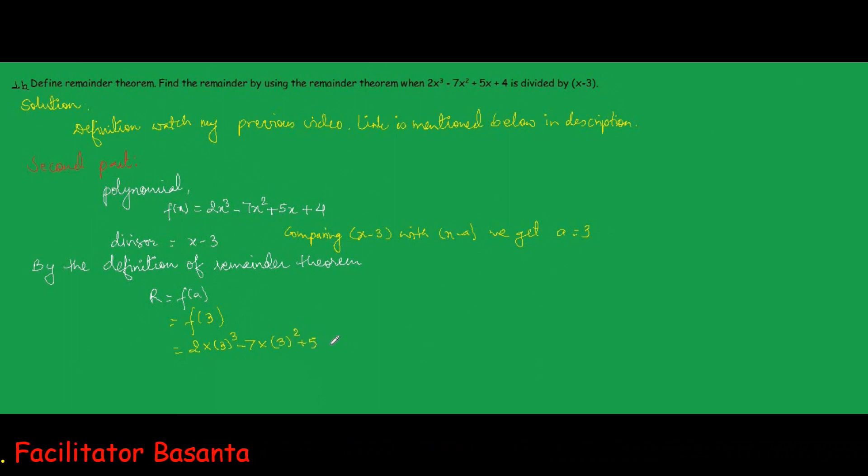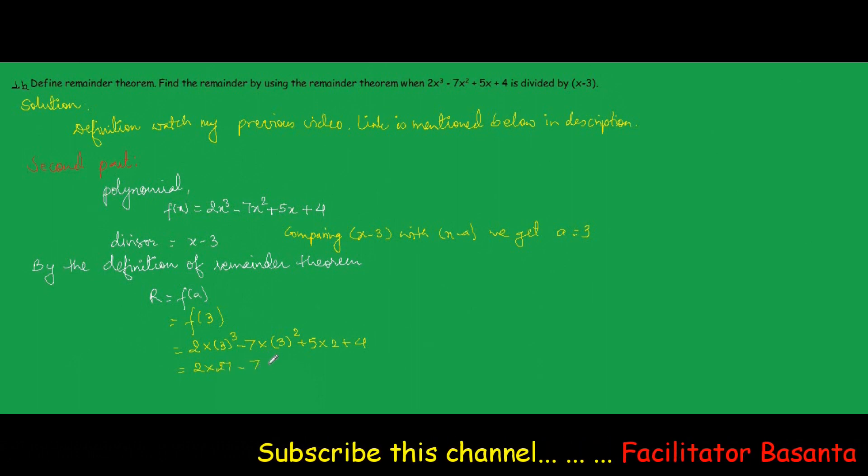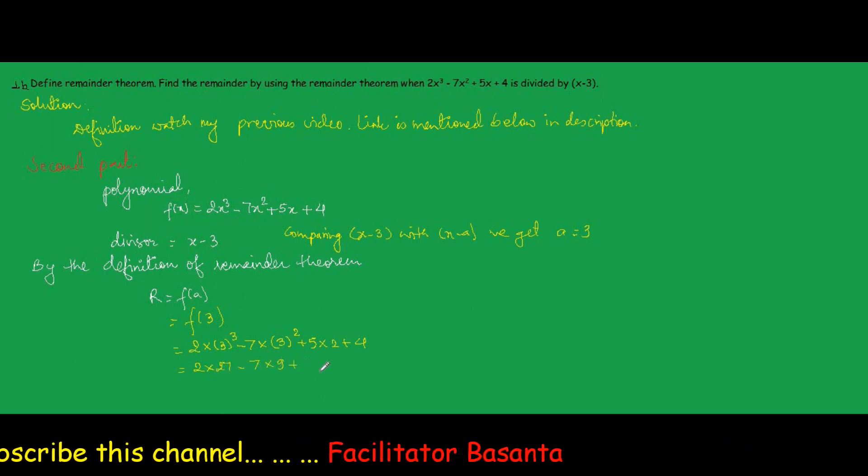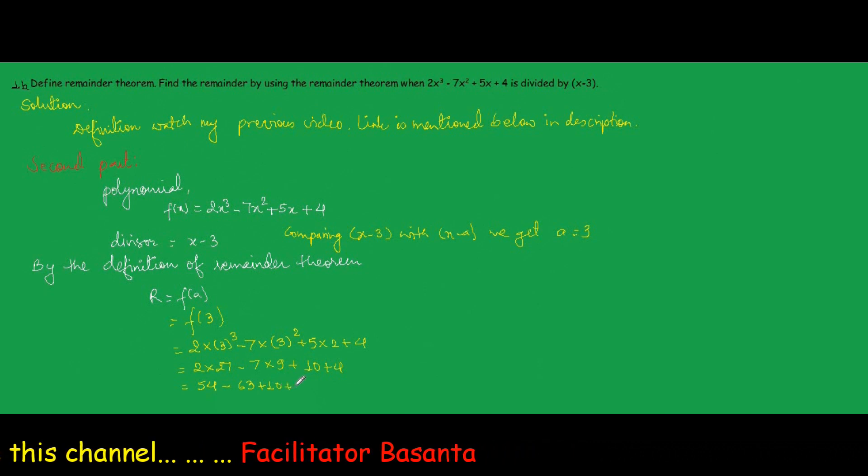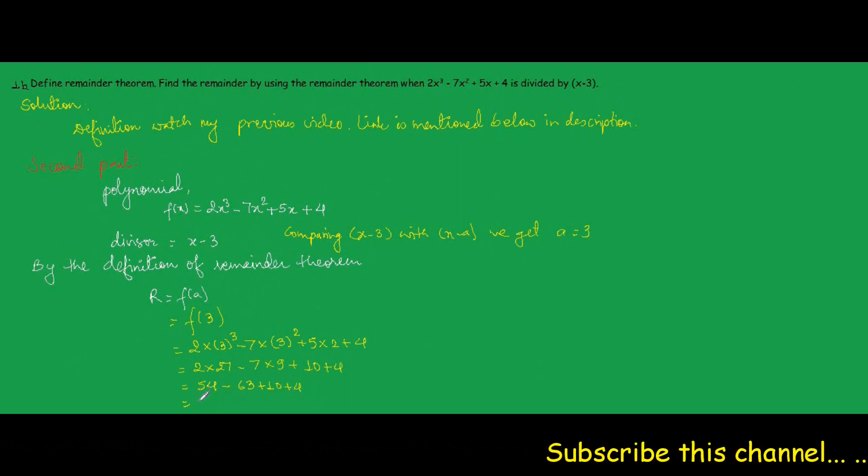This equals 2(27) - 7(9) + 5(3) + 4 = 54 - 63 + 15 + 4. 54 plus 19 is 73, and 73 minus 63 gives us the final answer.